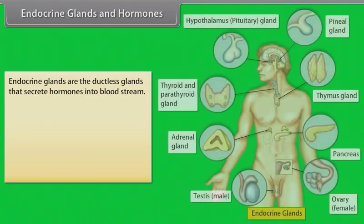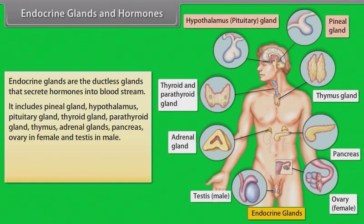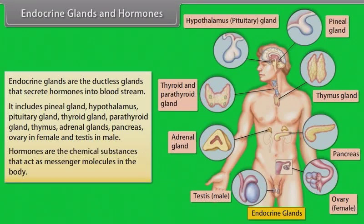Endocrine glands are the ductless glands that secrete hormones into the bloodstream. They include the pineal gland, hypothalamus, pituitary gland, thyroid gland, parathyroid gland, thymus, adrenal glands, pancreas, ovary in female, and testis in male. Hormones are the chemical substances that act as messenger molecules in the body.